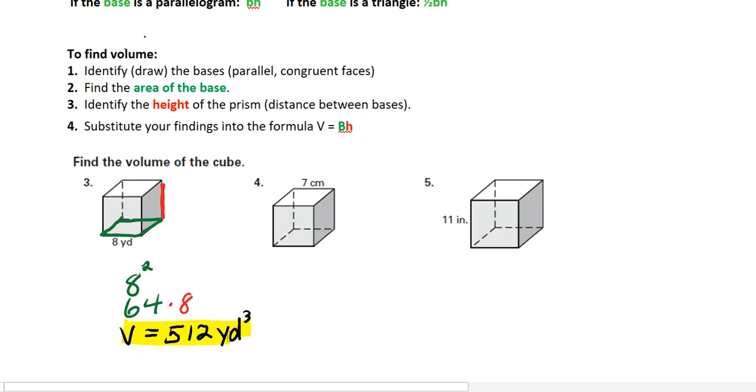So we're going to say our volume then is 512 yards cubed. Again, area of the base, which is 8 times 8 times the height. So essentially for a cube, you're just basically saying side cubed. And 7 to the third power is 343. So number four is 343 centimeters cubed. A cube is the only prism that you can do that with.